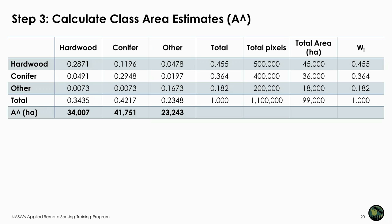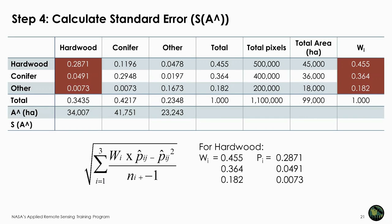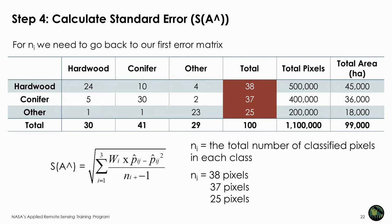The next step is to calculate the standard error for the area estimate of each class. This equation is used for a stratified random sample and is very complicated; we will go over it in more detail during the exercise. For each class, use W sub I. For hardwood, P sub I J values are 0.2871, 0.0491, and 0.0073. To get N sub I, go back to the first error matrix — it is the total number of classified pixels in each class: 38, 37, and 25 pixels respectively.